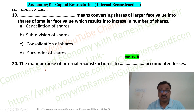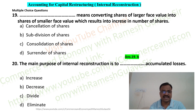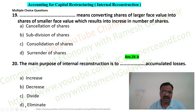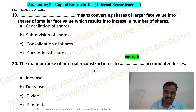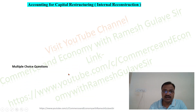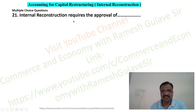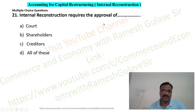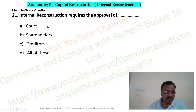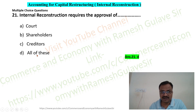The next question asks: the main purpose of internal reconstruction is to do what to accumulated losses? The main purpose is to eliminate accumulated losses from the balance sheet. Option B is the right answer. The following question asks: internal reconstruction requires the approval of whom? It requires approval of court, shareholders, and creditors — so option D, all of these, is the right answer.